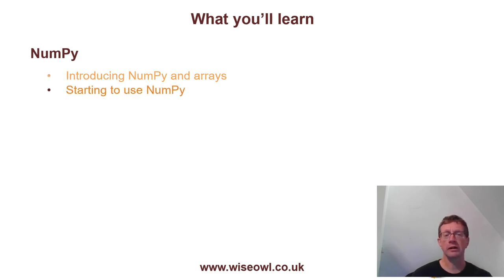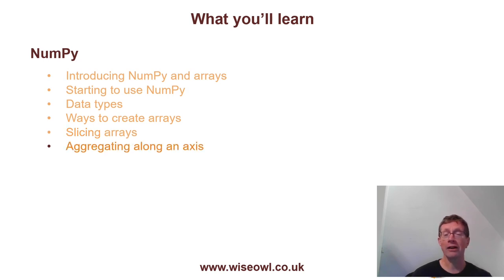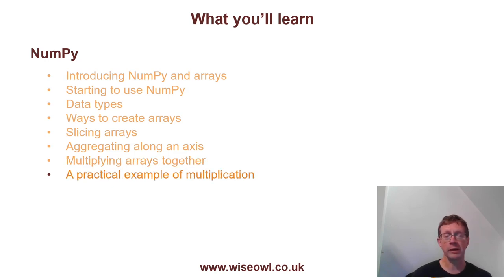We'll then go on to look at how you can start to use NumPy, and how you can assign a data type when you're creating an array and what the choices are. We'll look at various different ways in which you can create arrays within NumPy, how you can slice arrays to extract rows, columns, or blocks of data, and how you can aggregate along an axis using mean, max, min, or sum. We'll also look at how you can multiply arrays together — there are two different ways — and we'll do a practical example using Premier League football data.